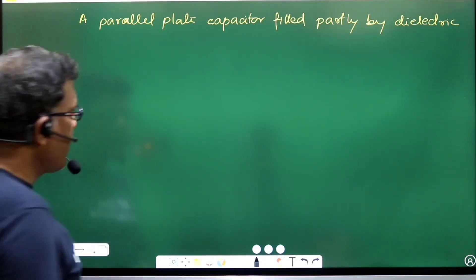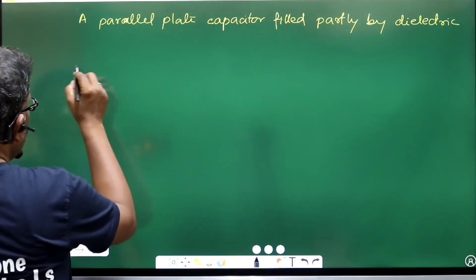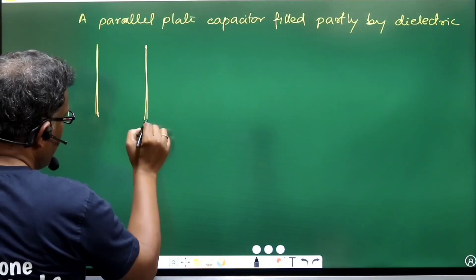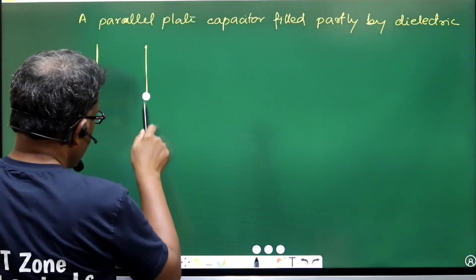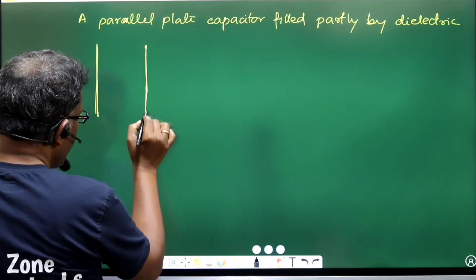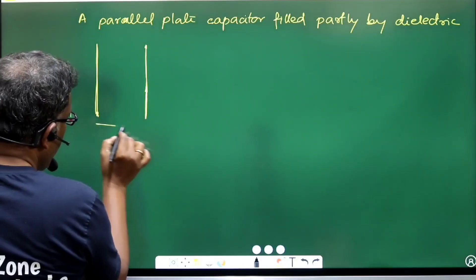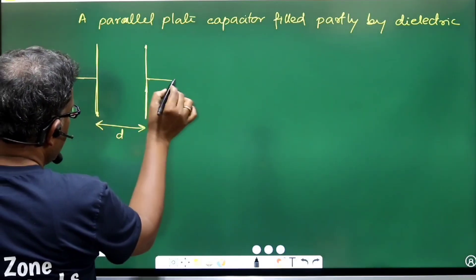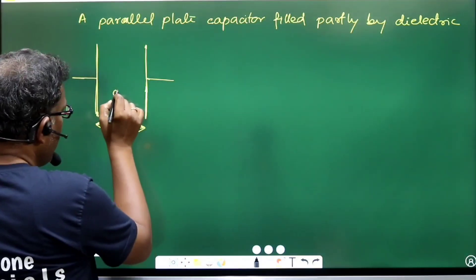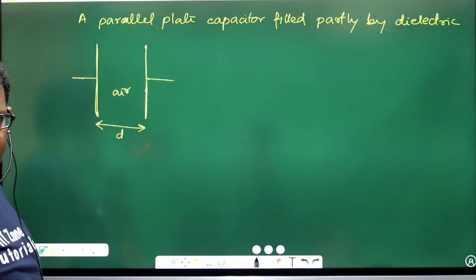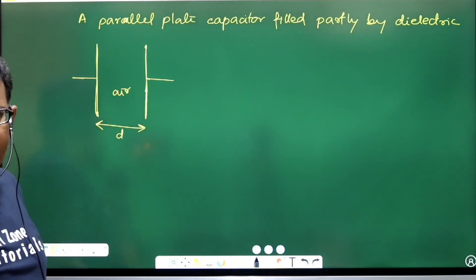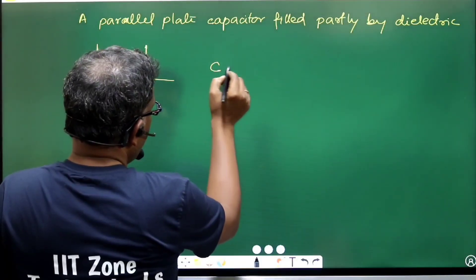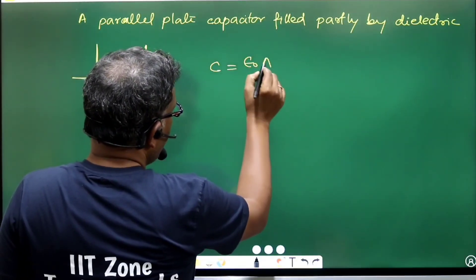When the entire space between two plates of a capacitor, having a plate-to-plate separation d, is filled with air — whose dielectric strength is considered to be ε₀ — we write the capacitance as C = ε₀A/d.